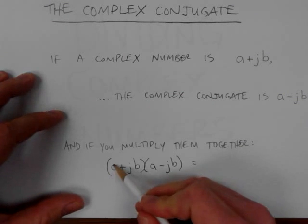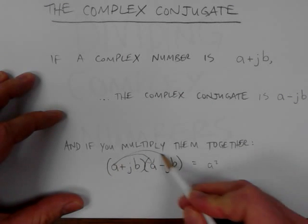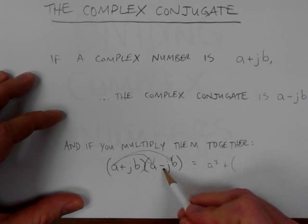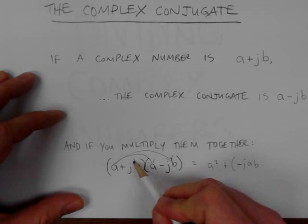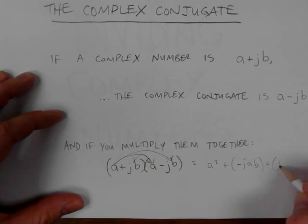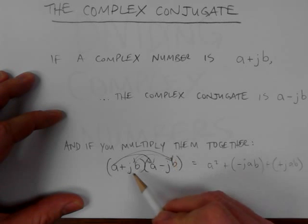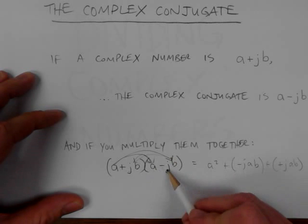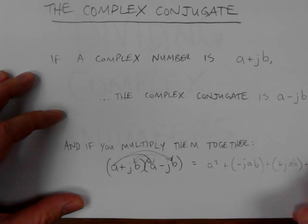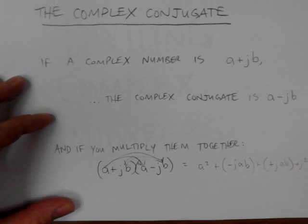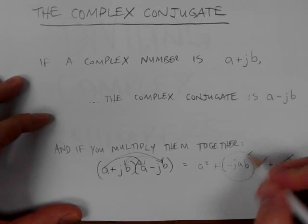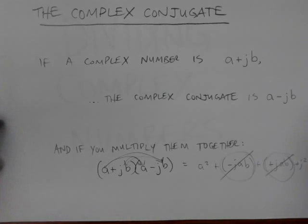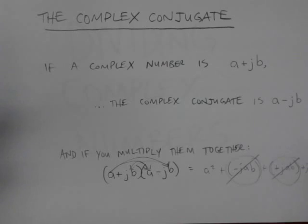I can show you this. Multiplying: a times a is a squared, plus a times minus jb gives minus jab, and then jb times a gives plus jab, and then j times j times b times b gives j squared b squared. The important part is you end up with minus jab and plus jab — they cancel out. We're going to use that to our advantage when dividing complex numbers.